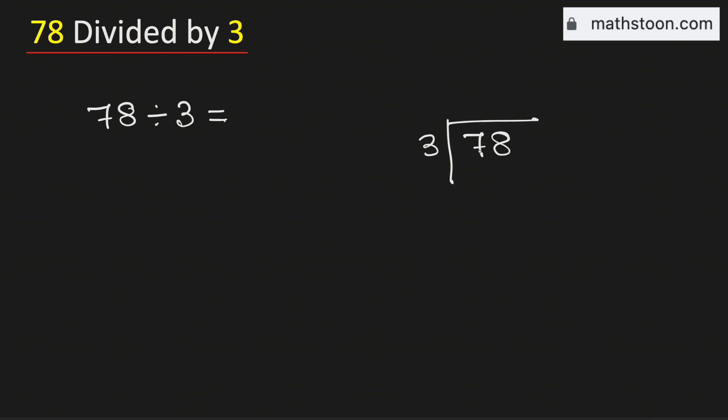Consider the first digit 7. 3 times 2 is 6. Subtract, we get 1.